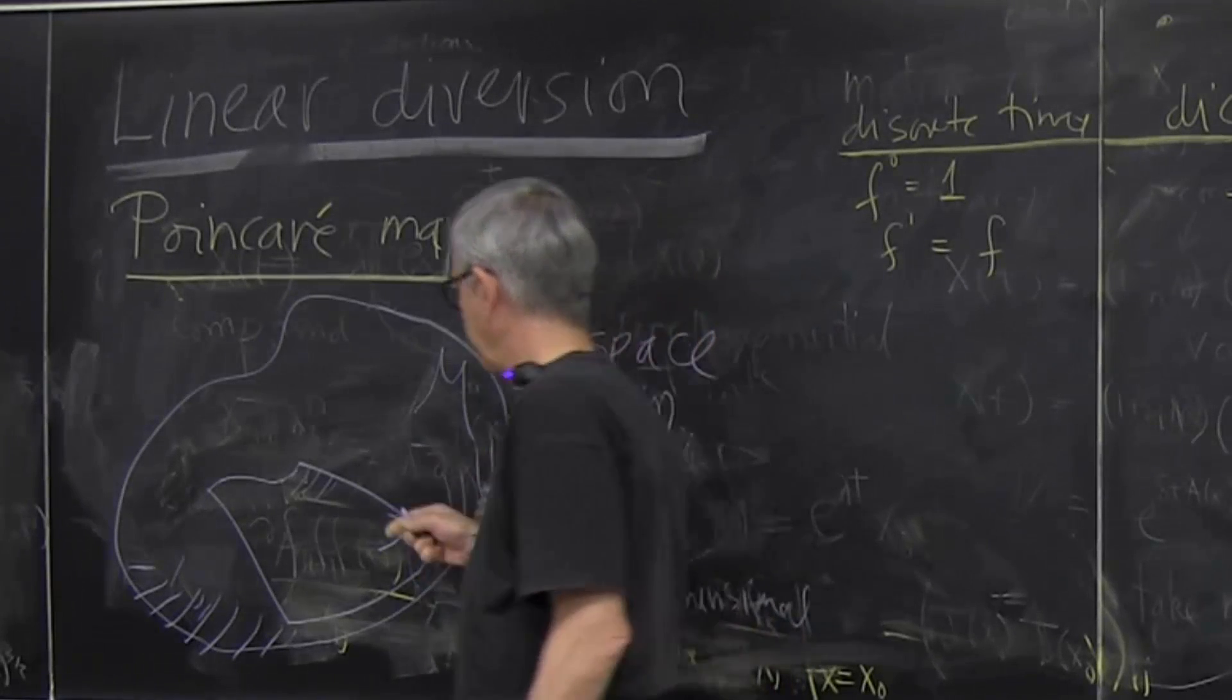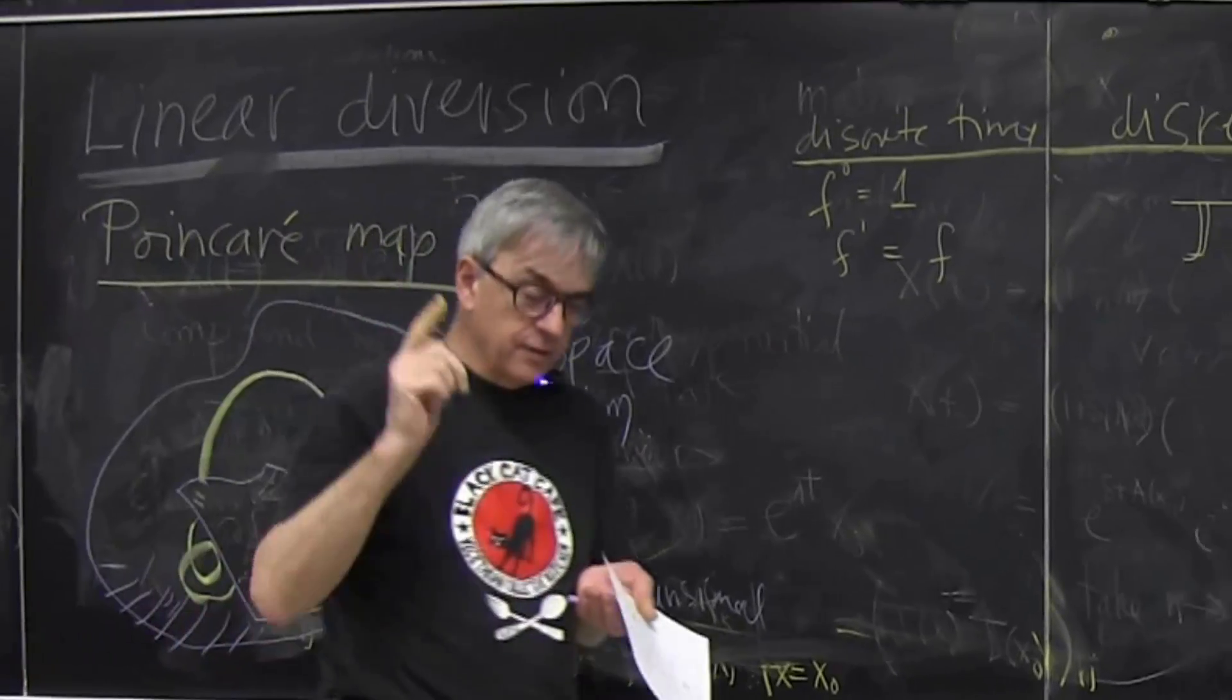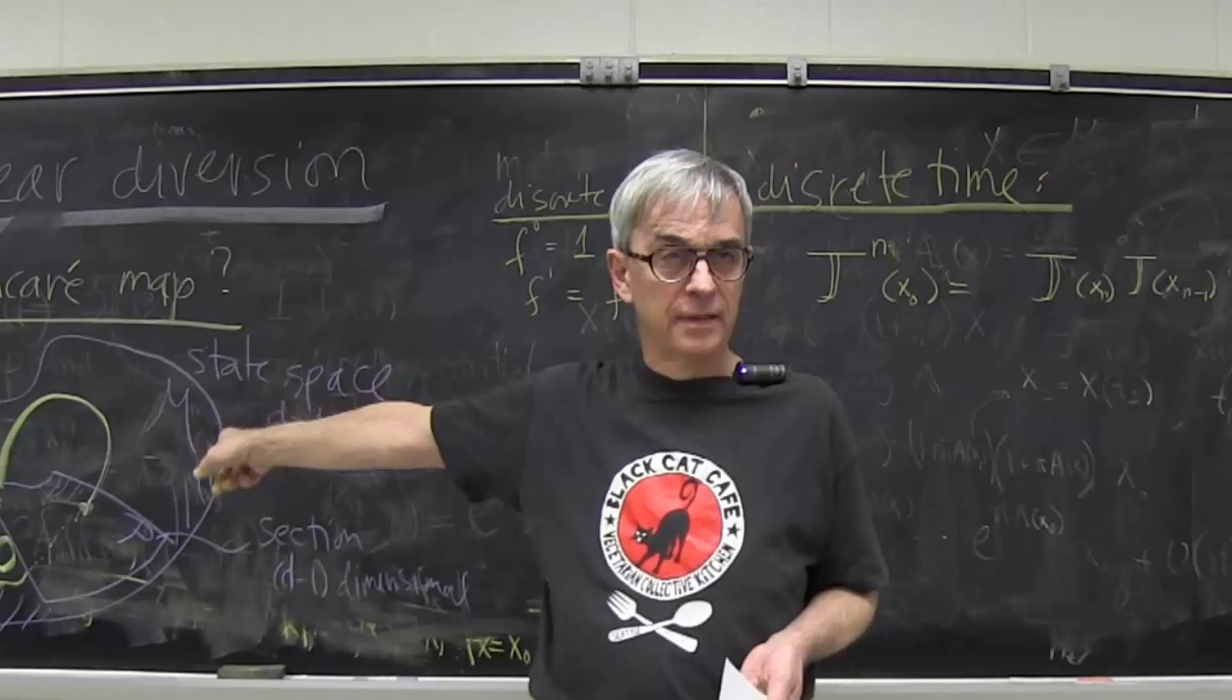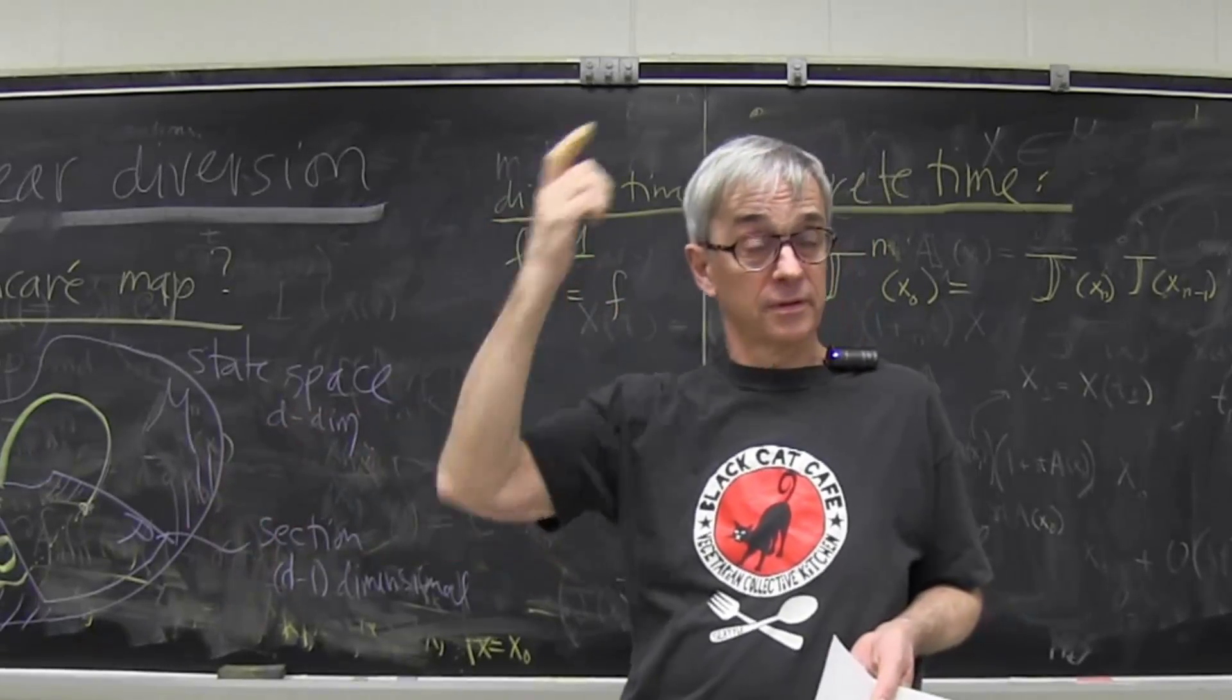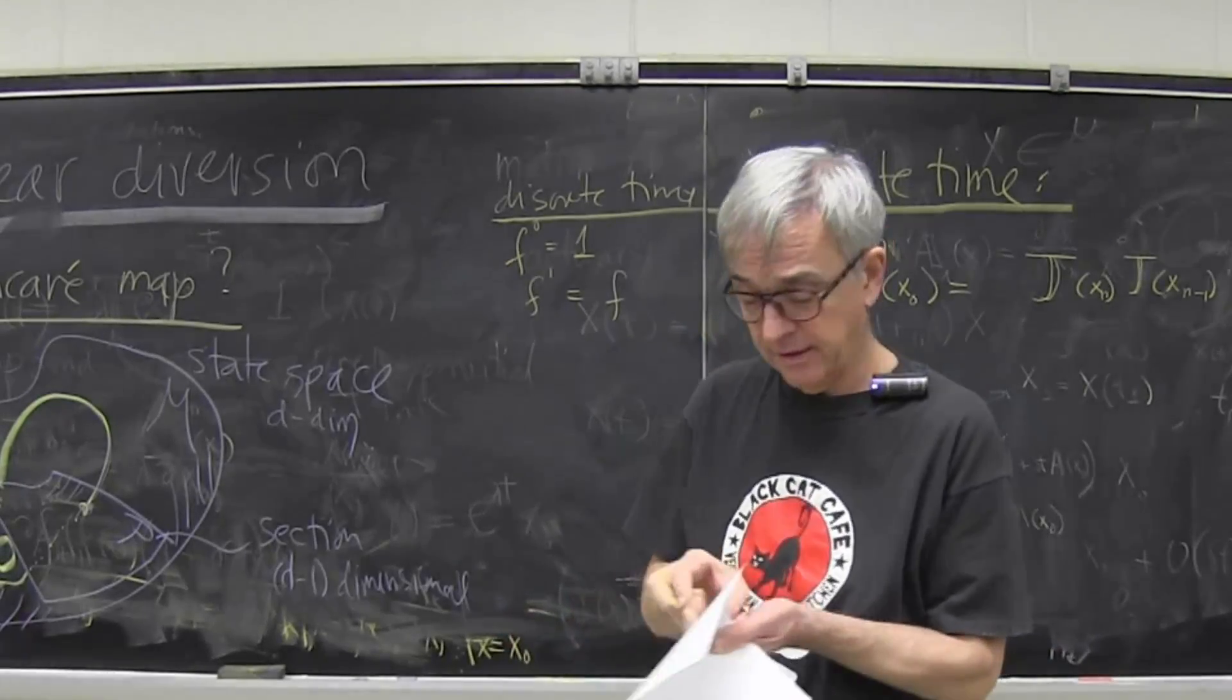But, for example, if I find the periodic orbit, whatever Poincaré section you got, you have to find that orbit as well. So that's a topological object. Time cannot destroy it. Change of coordinates cannot destroy it.